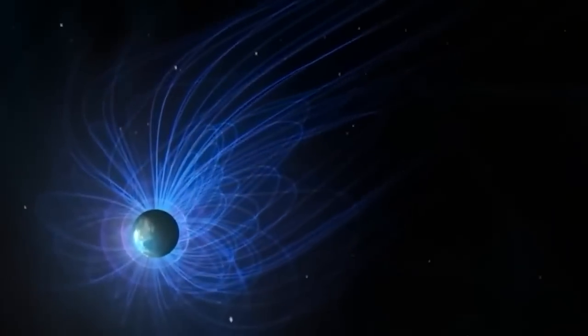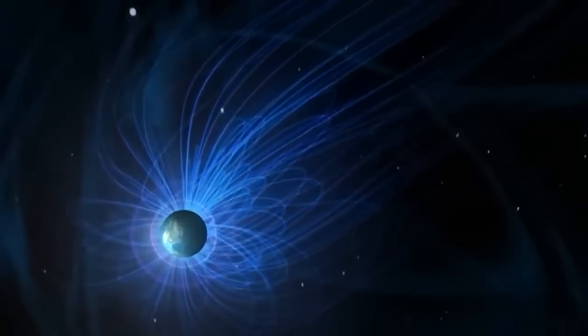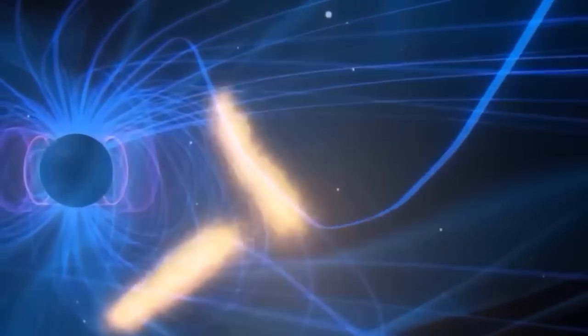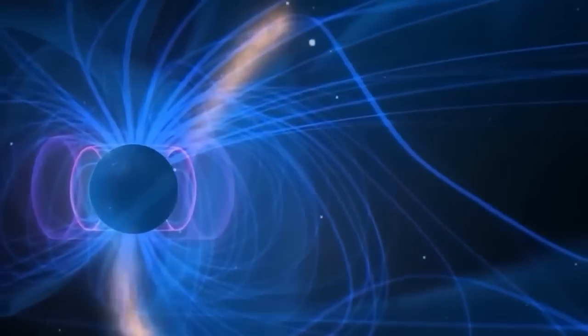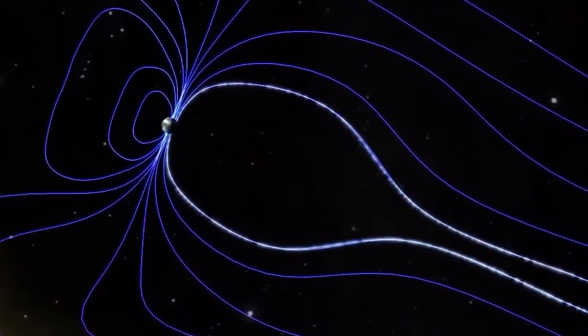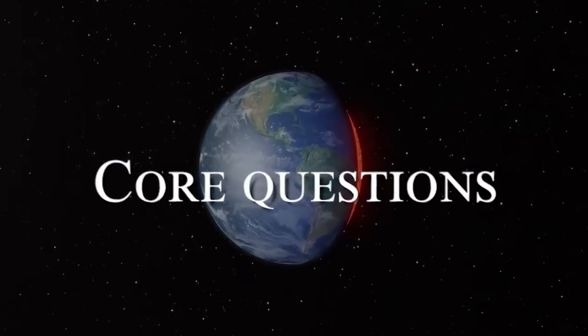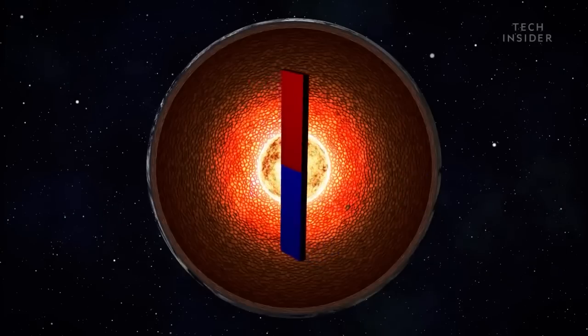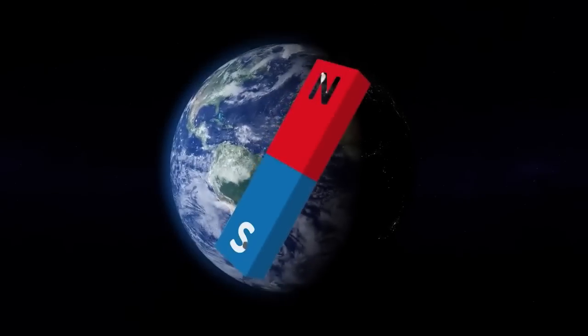To fix the world magnetic model, he and his colleagues put in data from the last three years, including the geomagnetic pulse of 2016. He says that the new version should be correct until the next update, which is scheduled for 2023. Core Questions. Scientists are still trying to figure out why the magnetic field is changing so quickly.